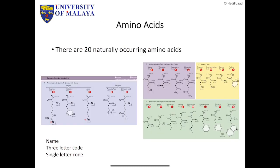Last Tuesday we looked at amino acids — there are 20 naturally occurring amino acids, which can be divided into 10 essential and 10 non-essential. We also looked at the naming system: the full name, three-letter code, and single-letter code. And we looked at the pKa values of the carboxyl terminal, the amine terminal, and the side chain for some amino acids. These are important if you ever want to work with amino acids or proteins.